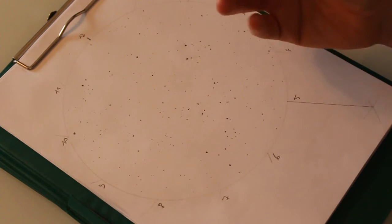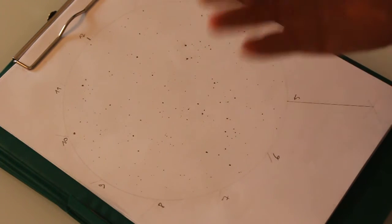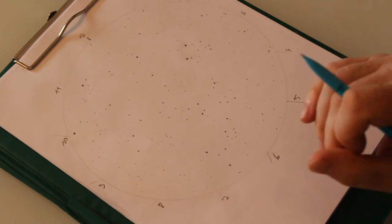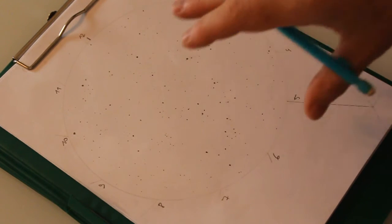Especially when the object is very large and complex, like for example M17, the Swan Nebula, which I'm going to use as an example. To show you how it's done, I'm going to copy this sketch that I've made earlier.